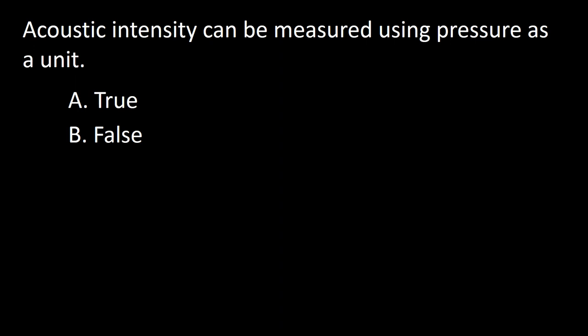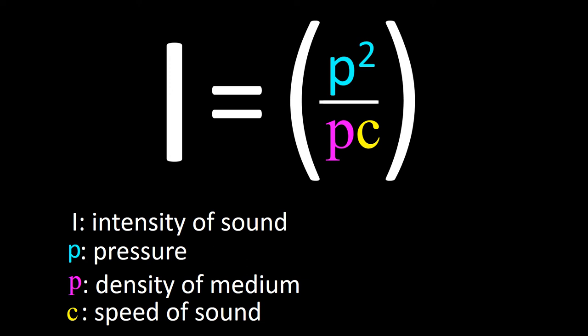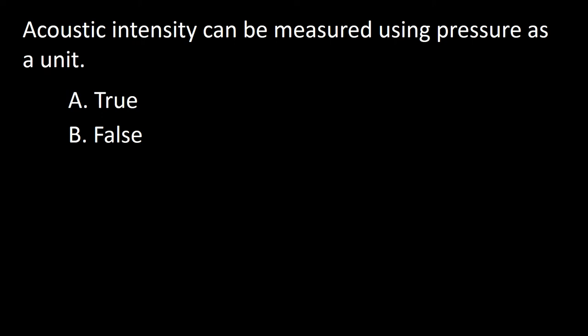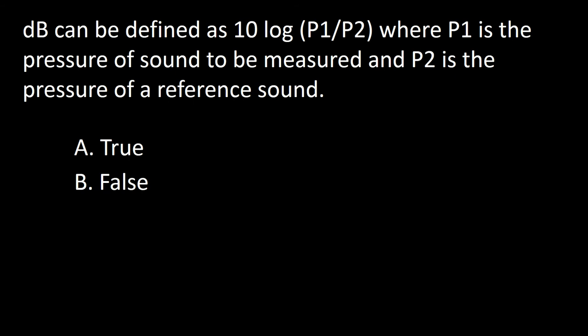Next question: Acoustic intensity can be measured using pressure as a unit — A: true, B: false. Acoustic intensity can be measured as a pressure because the intensity of sound is proportional to the square of its pressure at a given medium. Pressure is abbreviated by the letter P. The factors determining the value of the medium are density of the medium and the speed of sound. Remember that pressure is the reference level most often used for sound and not intensity. The answer is true.